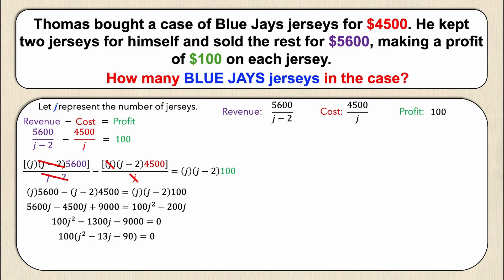The expression inside the brackets is in the standard form of a quadratic: ax squared plus bx plus c. To factor it, I need two numbers that add up to negative 13 and multiply to negative 90. After a bit of trial and error, those numbers are negative 18 and positive 5. So the factored form is: 100 times (j minus 18) times (j plus 5) equals zero.